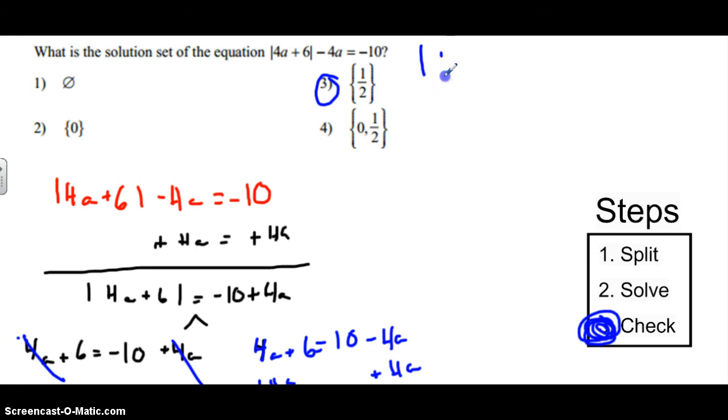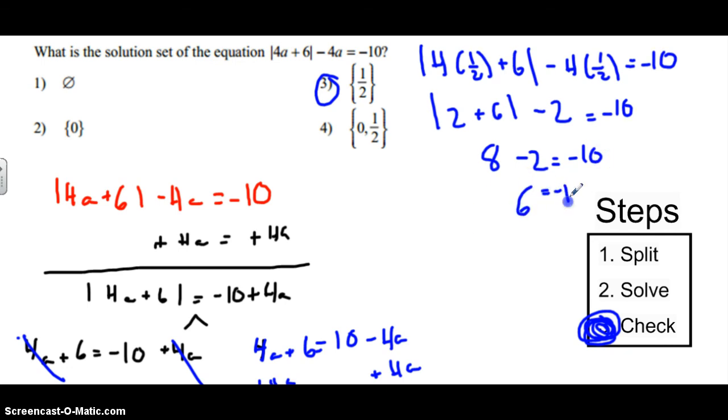So if I did the absolute value of 4 times 1 half plus 6 minus 4 times 1 half, does this all give me negative 10? Well, this will give me 2 plus 6 minus 2 equals negative 10. This gives me positive 8 minus 2 equals negative 10. And finally, I get 6 equals negative 10. So that is not correct.